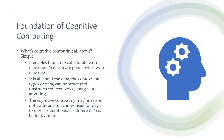The foundation of cognitive computing is to be understood. Cognitive computing is all about enabling humans to collaborate with machines. It's all about the data — the context could be types of data: structured data, unstructured data, text, voice, images, or anything. The cognitive computing machines are non-traditional; they are not like traditional IT machines. They are different and better by miles, and they bring more collaboration, a more effective and evolutionary approach to solving problems.